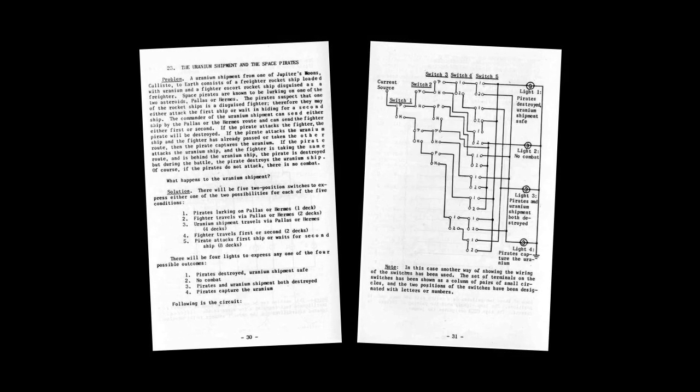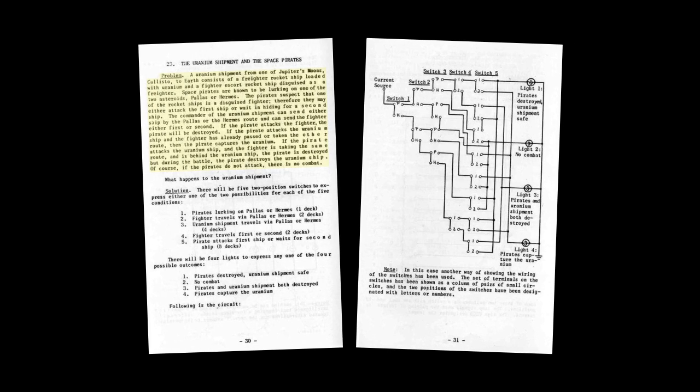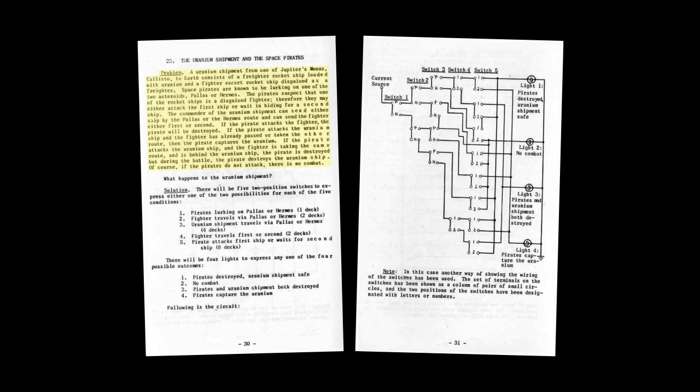The Uranium Shipment and the Space Pirates Problem. A uranium shipment from one of Jupiter's moons, Callisto, to Earth.